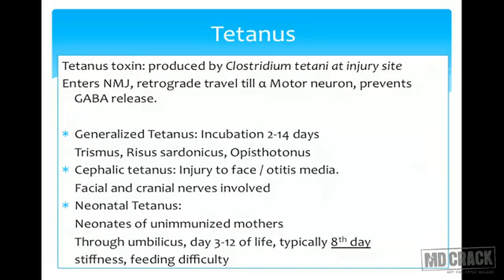Tetanus is caused by Clostridium tetani, a free-living organism found in soil — contaminated wounds are at high risk. The organism produces tetanus toxin, which invades the neuromuscular junction and travels in an ascending fashion along motor neuron axons. It inhibits GABA production — since GABA is an inhibitory neurotransmitter, loss of inhibition leads to muscle contraction in anti-gravity and antagonist muscles, causing spasms upon triggering.